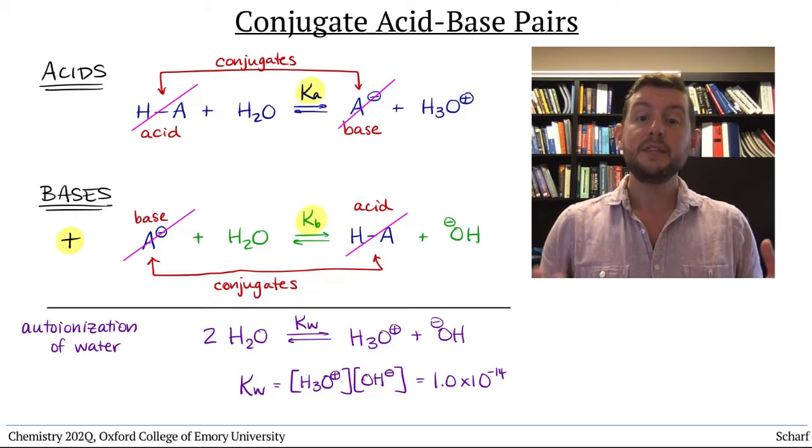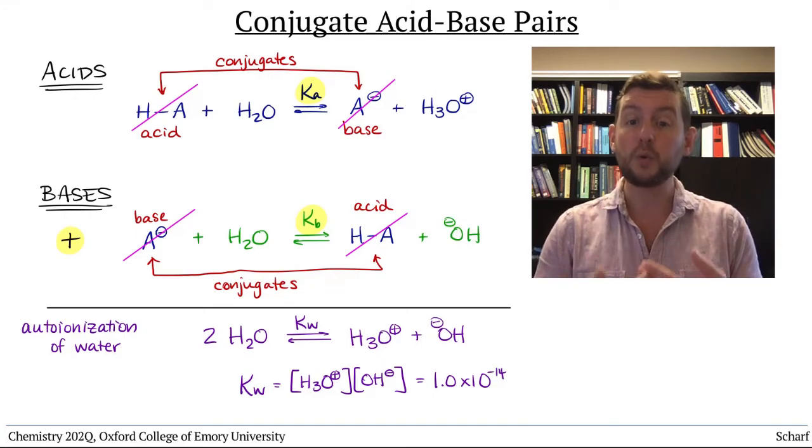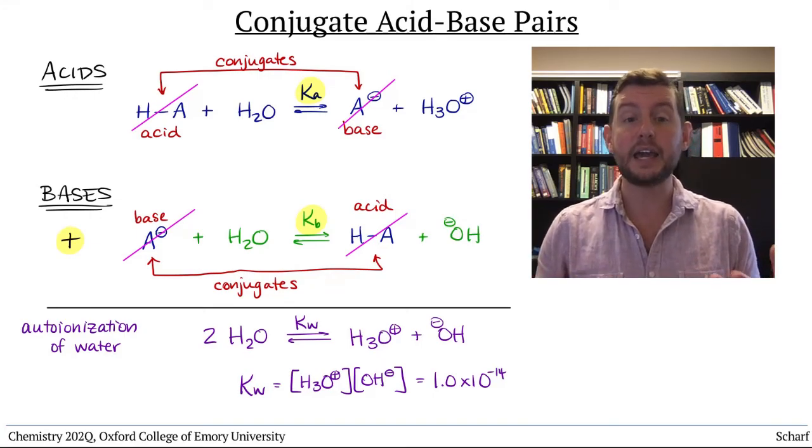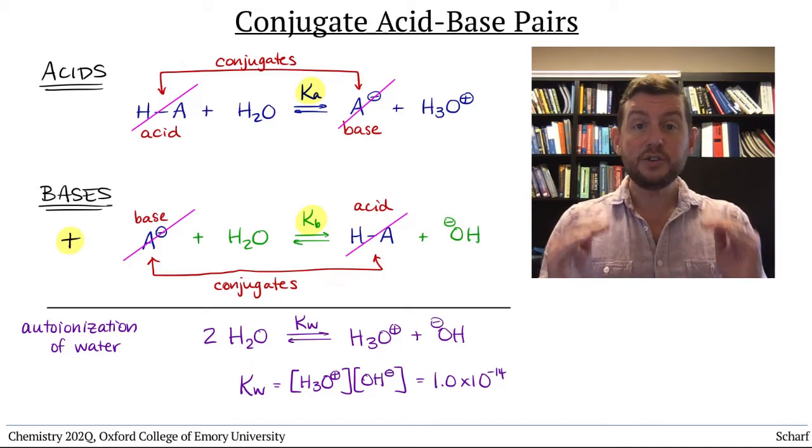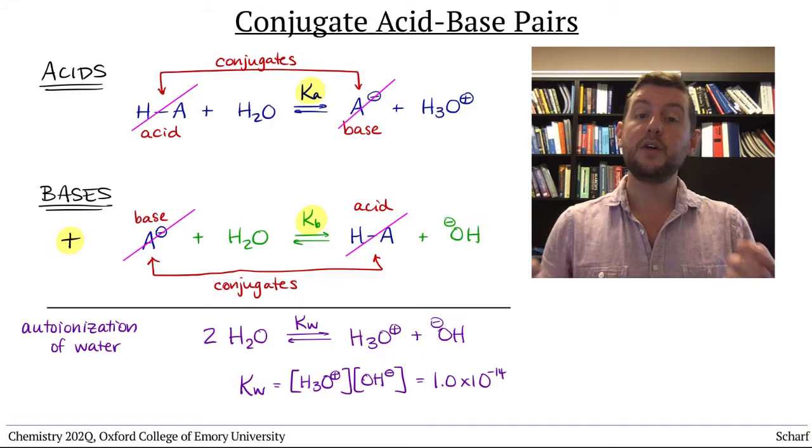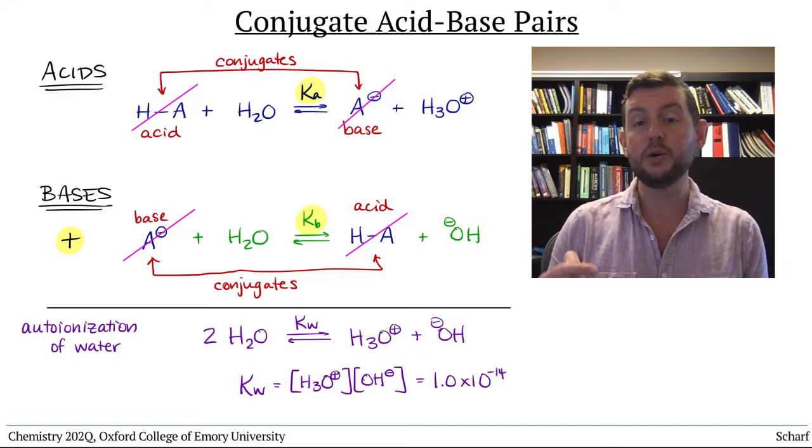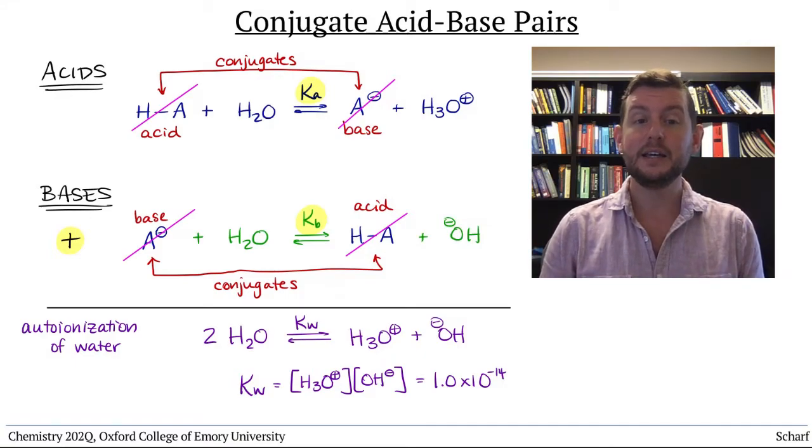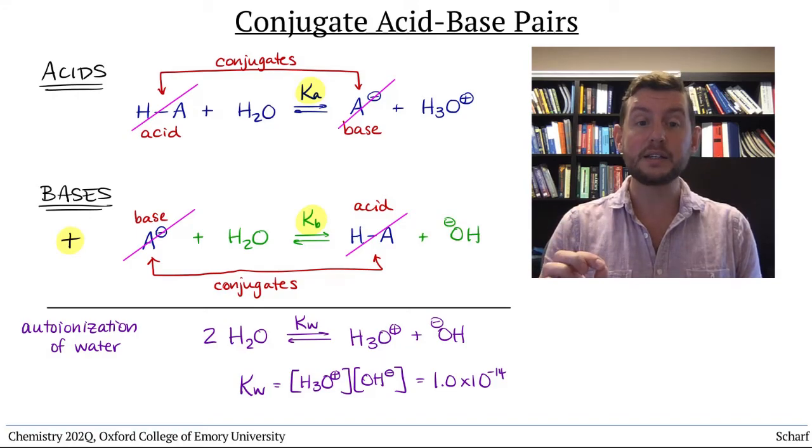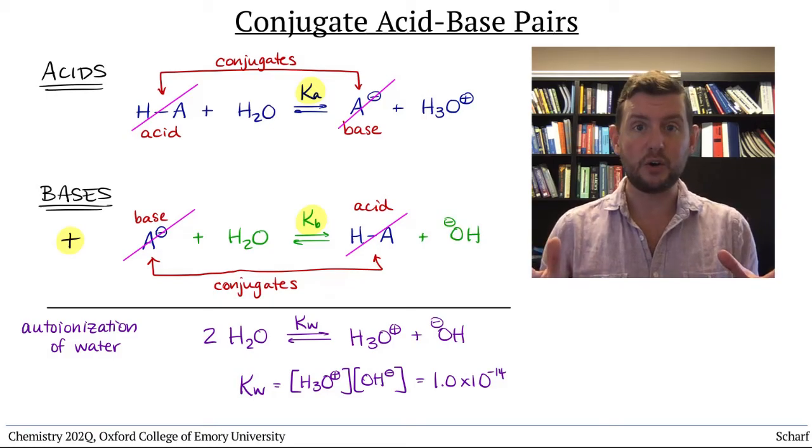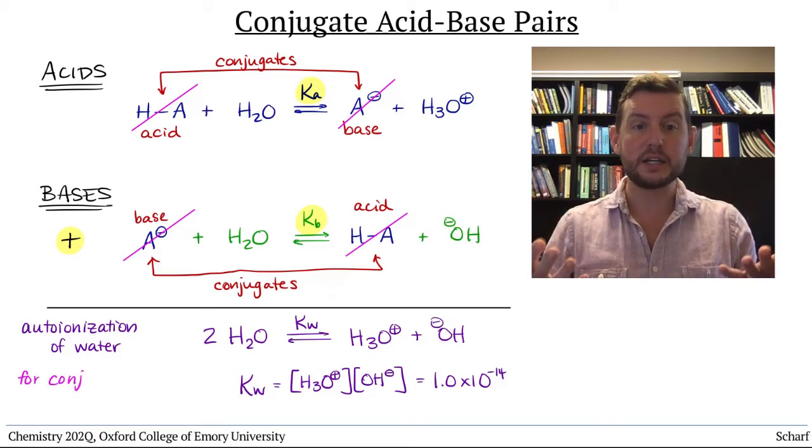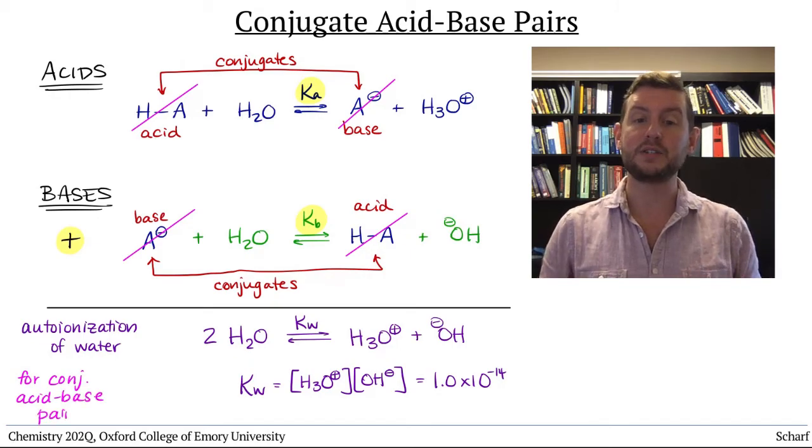there's a special relationship between Ka and Kb for that pair. Whenever you add two reactions together, the new reaction's equilibrium constant is the product of the equilibrium constants of the two original reactions. So, the special relationship for conjugate acid-base pairs is this.